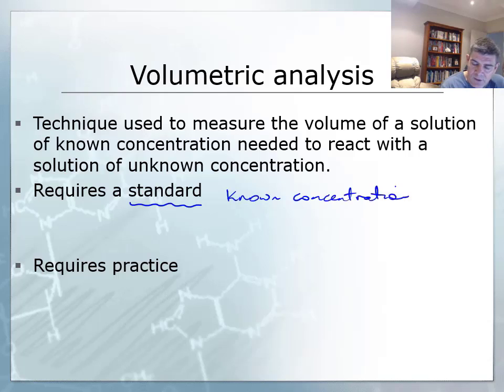There are two ways to know a concentration. You can either use what we call a primary standard. A primary standard is a substance that has certain characteristics such as large molar mass. It's stable, doesn't absorb moisture from the atmosphere, and remains consistent and pure over time, so its concentration is not going to be constantly changing.